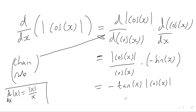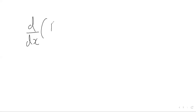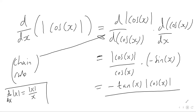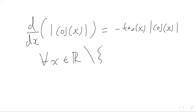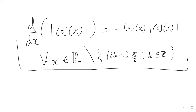That's our final result. In conclusion, when we differentiate the modulus of cos of x with respect to x, we get negative tan of x multiplied by the modulus of cos of x. This derivative is valid for all x in the real numbers, apart from the odd multiples of pi over two — that is, apart from (2k minus 1) times pi over two, where k is any integer.